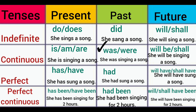For past continuous tense, verb ing will again be used but the helping verbs are was and were. Was is used with singular subjects and were is used with plural subjects. For future continuous tense, will be and shall be are the helping verbs — she will be singing a song.